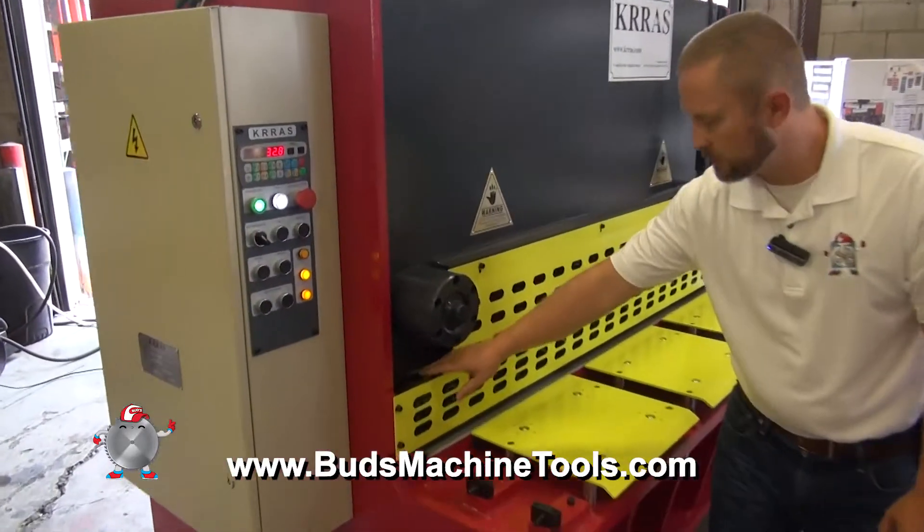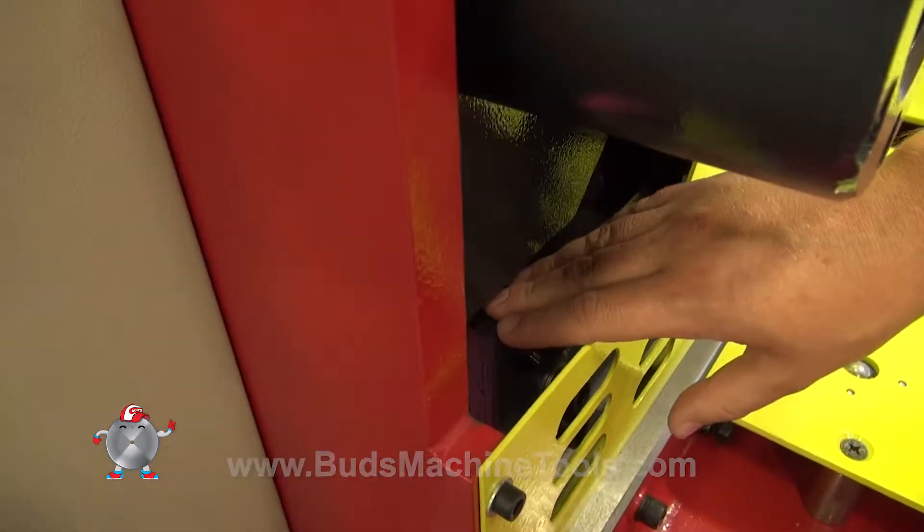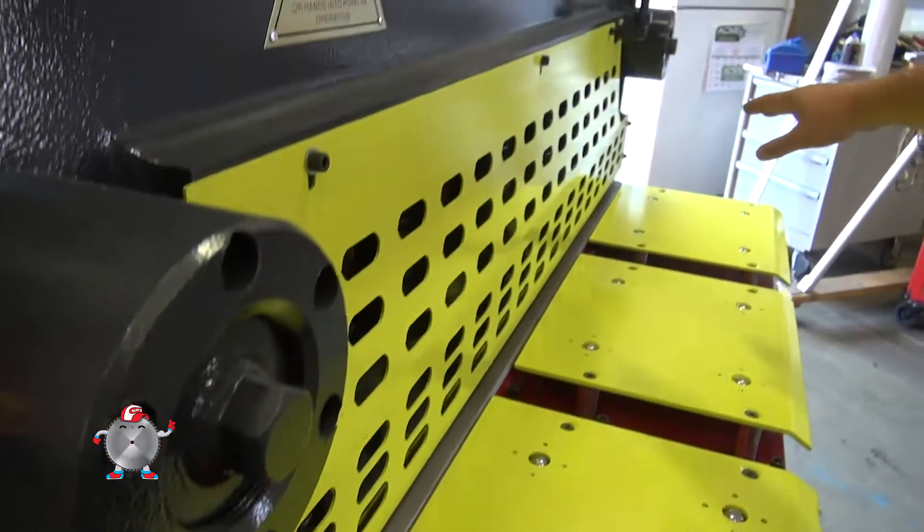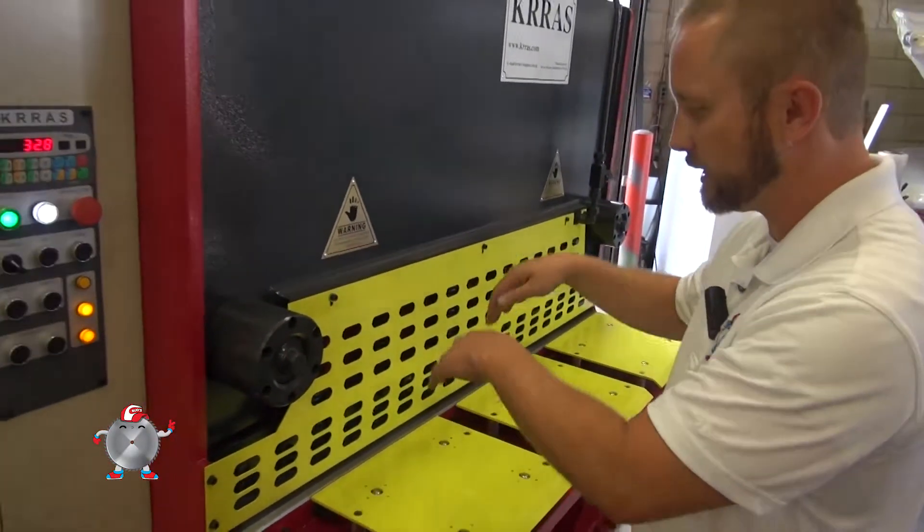Just going to demonstrate how this shear is different than others. As you can see here, this right here has a solid piece hold down that goes across the whole width of the shear, so it holds the material no matter what, so it has no gaps that are missing as far as when it cuts.